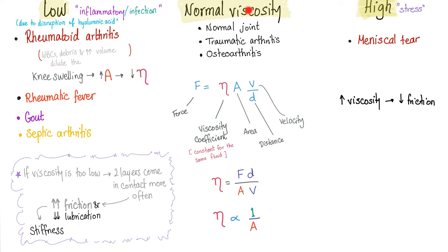Viscosity of the synovial fluid can be normal, low, or high. Normal viscosity is seen in a normal joint, traumatic arthritis, and osteoarthritis. Low viscosity occurs in cases of inflammation or infection — due to disruption of the hyaluronic acid.